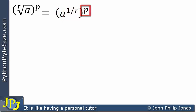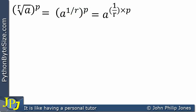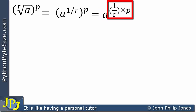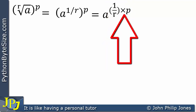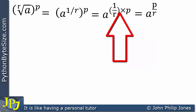The brackets are then raised to the power of p. When a base is raised to a power and the result is then raised to another power, you can multiply the indices — as shown in a previous video. We can rewrite this as a raised to one divided by r, multiplied by p, giving us a raised to the power p divided by r.